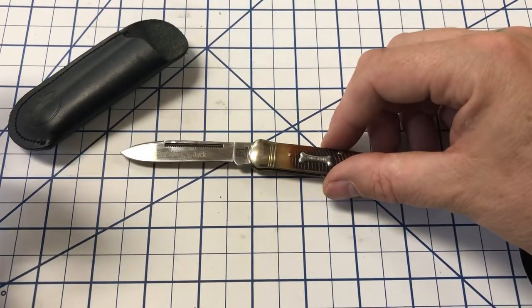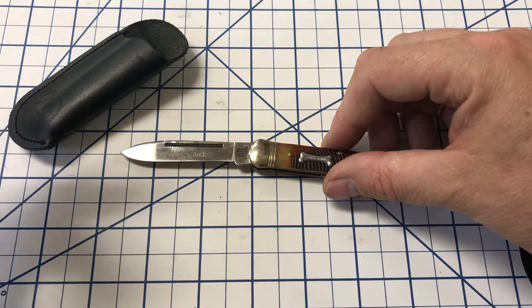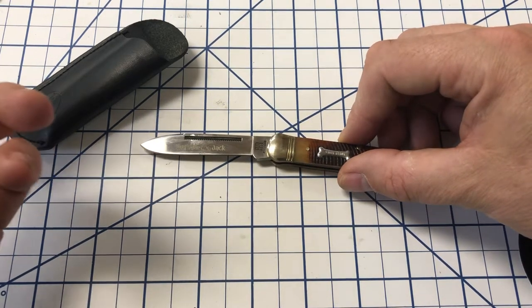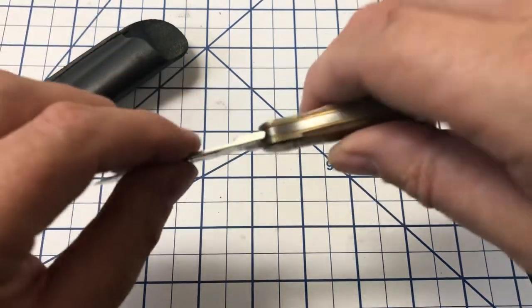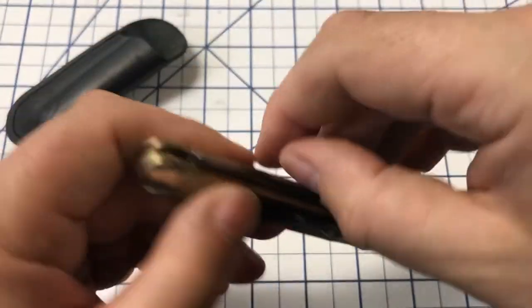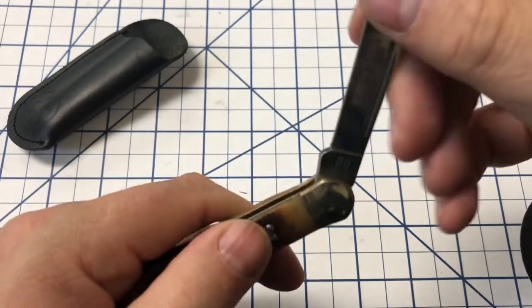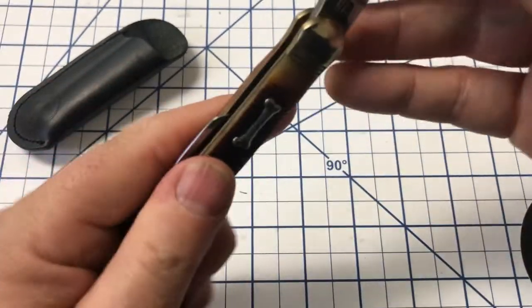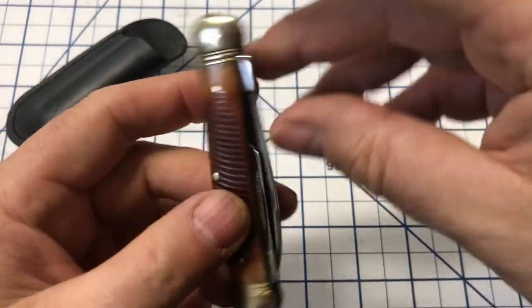The main blade length on this is about two and three quarters, maybe just a little less. Cutting edge is going to run about two and a quarter inches. The snap on the main blade on this one is pretty light. I would say this has a pull of about a two, so I really would like a little bit of snap on that.